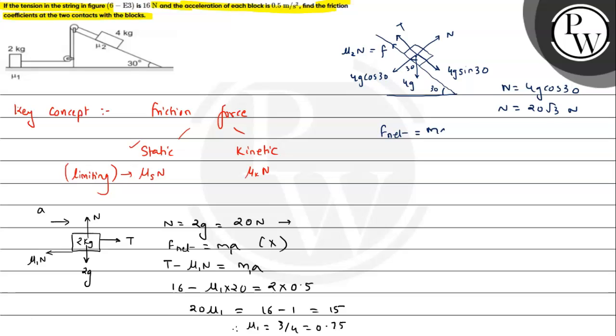Now we can apply F net is equal to ma along the incline. And its acceleration is given, so let's say acceleration is in the downward direction we are taking, 0.5 meter per second square.